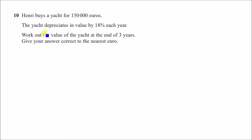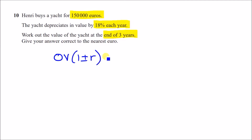Number 10: Henry buys a yacht for 150,000 euros. The yacht depreciates in value by 18% each year. We need to find the value at the end of three years. For every compound interest, depreciation, or appreciation question, always write: New Value = Original Value × (1 ± rate)³, with the number of years as the power on the bracket.